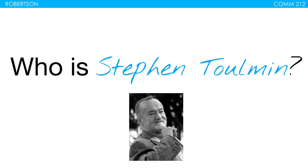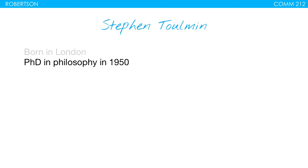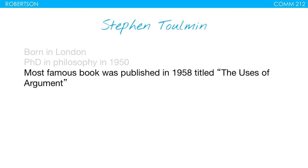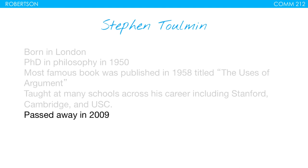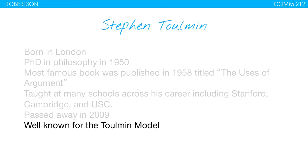Looking at the background — who is Stephen Toulmin? He was born in London. He has a PhD in philosophy that he got back in 1950. His most famous book was published in 1958 titled The Uses of Argument — one of those books that made a significant impact in the way that people consider and think about argument. He taught at many different schools across his career including Stanford, Cambridge, USC, and quite a few others. He passed away in 2009 and was well known for the Toulmin model as well as his overall contributions to argumentation and teaching. The Toulmin model is really the one thing you could say he's known for the most.